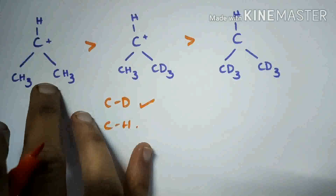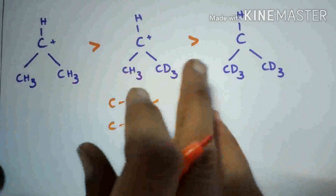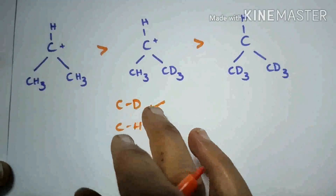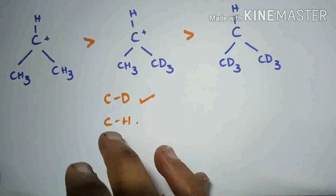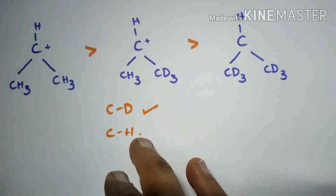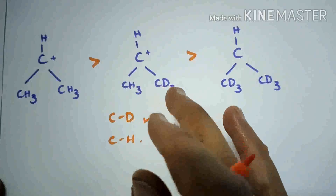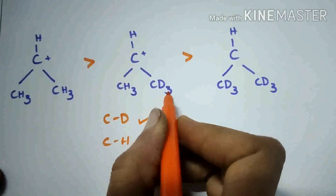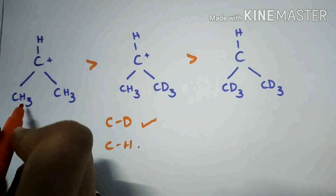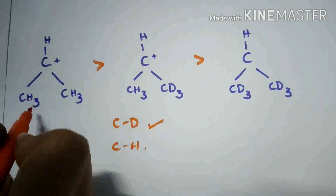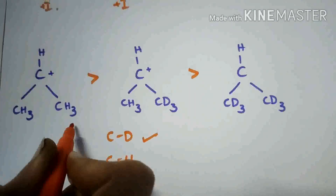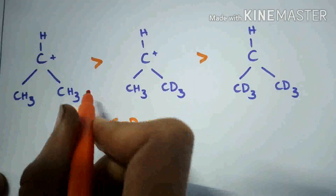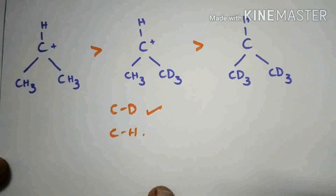In this question, the stability is in this order. Why? Because the carbon-deuterium bond dissociation energy is more when compared to the dissociation energy of carbon-hydrogen. So CD3 donates less electrons when compared to CH3. Therefore, when alpha hydrogens are more, the stability of the compound is more, and the stability order follows accordingly.